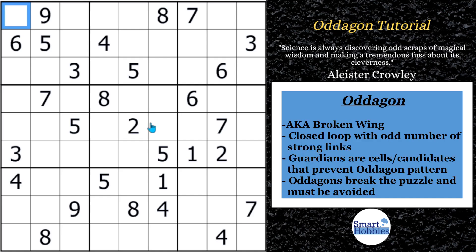An Autogon is also known as a broken wing. The simple definition is this: it's a closed loop with an odd number of strong links. If you're not sure what strong links are, you need to understand what a strong and weak link is. I'll explain it here, but I suggest you are very familiar with my XY chain tutorial before we move on. This is a highly advanced strategy.